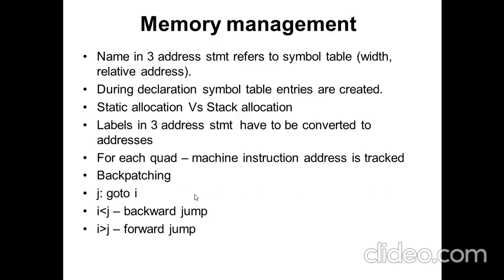For memory management: the input to the code generator is in three-address format. When three-address statements are read, all information is updated in the symbol table. The symbol table contains variable names — identifiers — and their relative addresses. Whenever you declare a variable, an entry is created in the symbol table. In static allocation, memory is not changed; in stack allocation, we can make alterations. The labels of the three-address statements are converted into addresses, with each address extracted by the quadruple arrays.